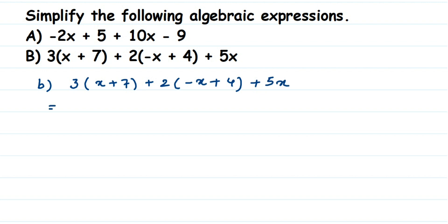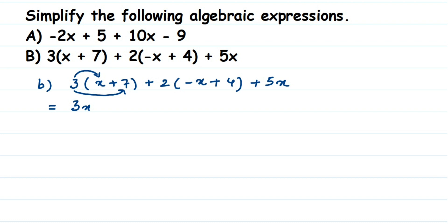In the first term, we have 3 outside the bracket — it means 3 multiplied by the whole bracket, even though the multiplication sign isn't written. So multiply 3 with x to get 3x, and multiply 3 with 7 to get 21. So opening the first bracket gives us 3x plus 21.